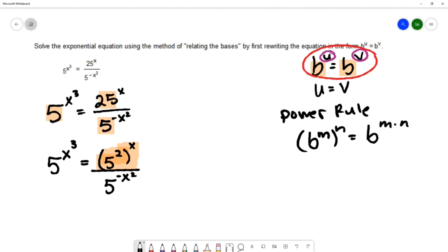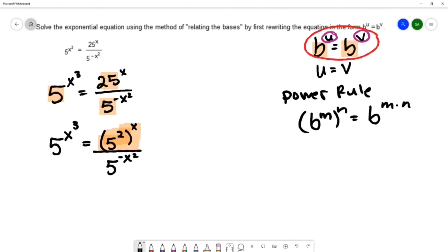So that's going to allow me to rewrite this as 5 to the x cubed equals 5 to the 2x over 5 to the negative x squared. So I multiplied that 2 and x together.